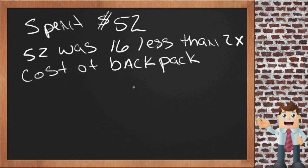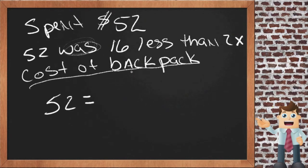Now let's see if we can write this out as an equation. We know that $52 is the same thing as $16 less than 2 times the cost of something else. We don't know what this other cost is, so this is going to have to be our variable. Let's use B for backpack. So let's put our B down in here. And we know that it's related to 2 times B, whatever it is. We're talking about 2 times the cost of the backpack.